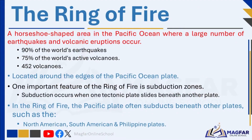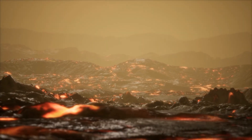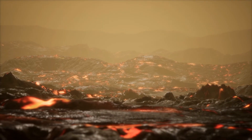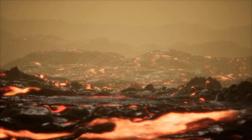Subduction is a common feature in the Ring of Fire. Subduction occurs when one tectonic plate slides beneath another. In the Ring of Fire, the Pacific plate often subducts beneath other plates such as the North American, South American, and Philippine plates. Deep in the earth it is extremely hot — so hot that rocks actually melt and form magma, which makes up the mantle of the earth.